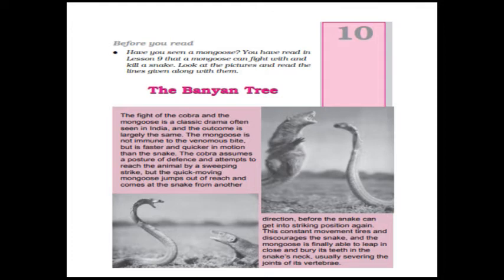The mongoose moves quickly and jumps out of reach, coming from the other direction before the snake can get into striking position. This is called dodging — to move quickly from one side to another. The mongoose keeps repeating this technique, and when the snake gets really tired, it quickly attacks by burying its teeth in the snake's neck and attacking the vertebra. In this chapter, the author narrates the fight between mongoose and cobra.